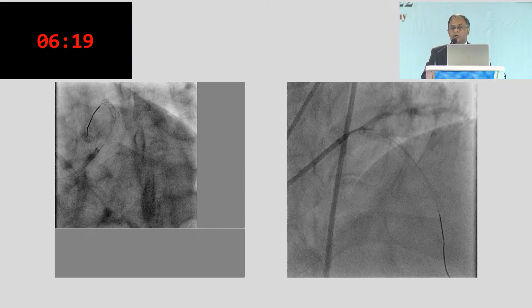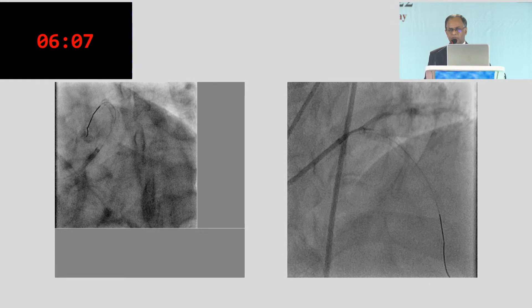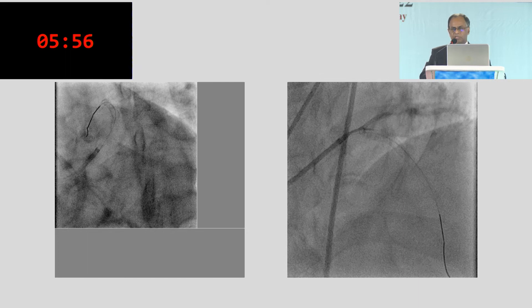The patient was subsequently managed conservatively. Ejection fraction reduced to 40%. Chest pain subsequently subsided — possibly because of the MI — all that muscle was lost, so there was no area left for ischemia. This was the experience from around 10 years back. Since then I always tell my fellows and juniors: if it is SCAD, don't do anything.